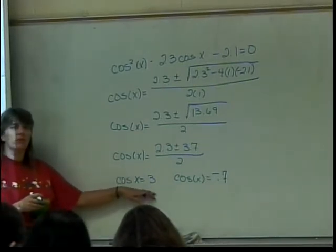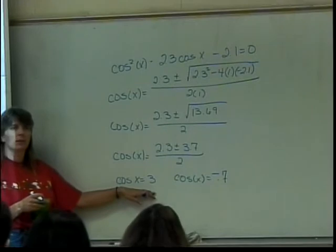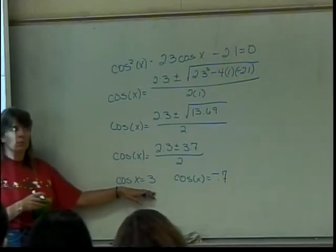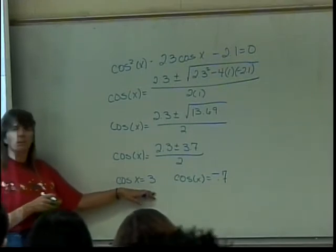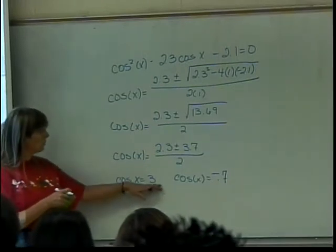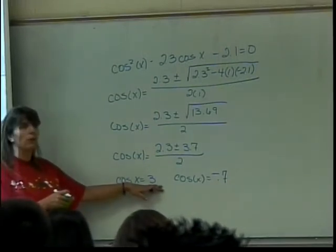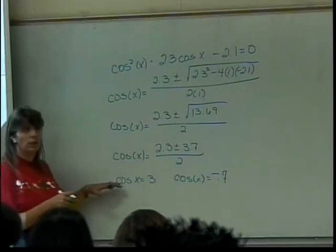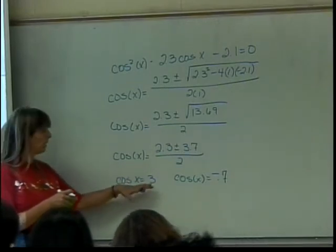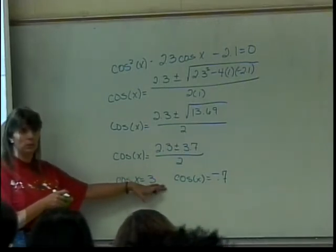What can you tell me about this? She's telling me that 3 is not in the domain of my arc cosine. So if I take the inverse cosine of both sides, I'm going to be taking the inverse cosine of 3. That's not possible. I can't do it. 3 is not in the domain.